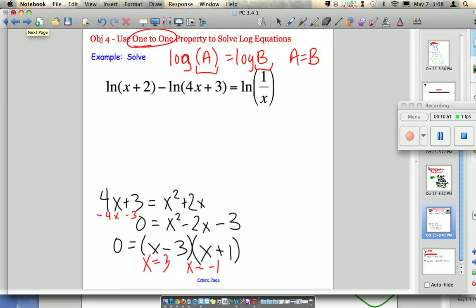I'm going to start with the negative, because I'm assuming the negative may not work. Natural log of negative 1 plus 2. Oh, so far so good. That's just the natural log of 1. Minus the natural log of 4 times negative 1 plus 3. Oh, this is going to be a problem. It says natural log of negative 1. There is no natural log of negative 1, so this is not a solution.